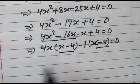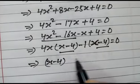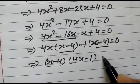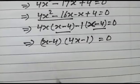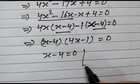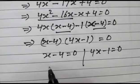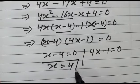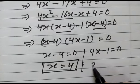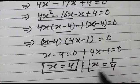So, x minus 4, x minus 4 is equal to 0. Now, we can say x minus 4 is equal to 0 and 4x minus 1 is equal to 0. So, x is equal to 4. This is the first value of x and another value of x will be equal to x is equal to 1 by 4.